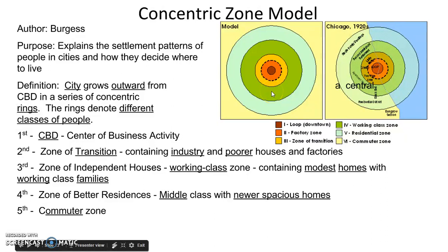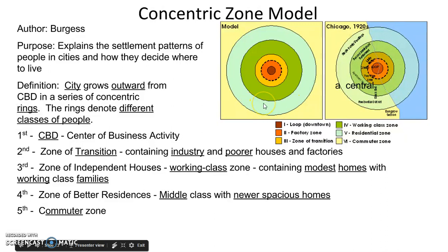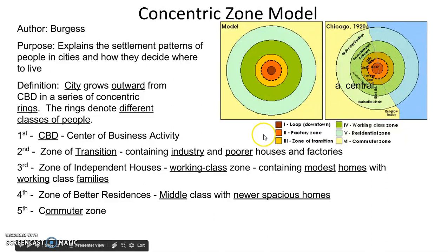In the fourth ring, we have the zone of better residences — wealthier, middle-class people with newer, spacious homes. And all the way on the outside is our commuter zone, where people have much bigger land areas and much bigger homes. They've escaped the built-up areas of the central city and commute into the city for work every day. The concentric zone model was modeled after Chicago, where there's no barrier to expansion — flat land on the prairie — with the exception of Lake Michigan to the east.